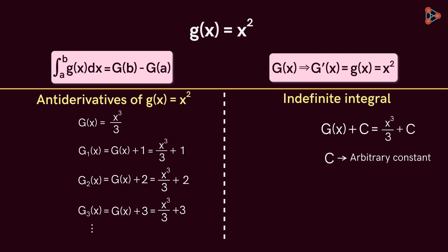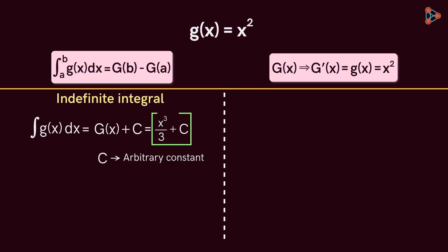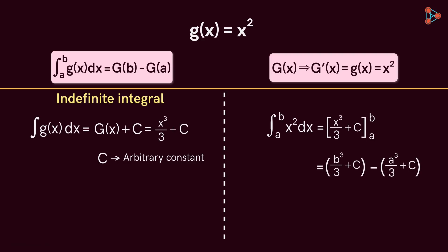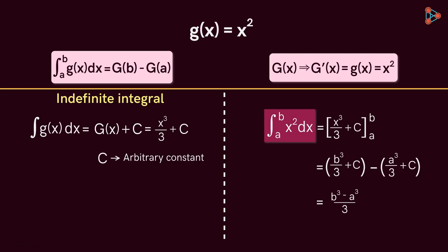We denote it by the integral symbol without the limits of integration. Once we know the indefinite integral, we can easily find this integral. The indefinite integral of x squared is equal to x cubed over 3 plus a constant C. Evaluating it at the limits of integration, we will get this. Notice that for this integral we will get a number as our answer, whereas for the indefinite integral we get a function. So this integral with the limits of integration is called the definite integral.